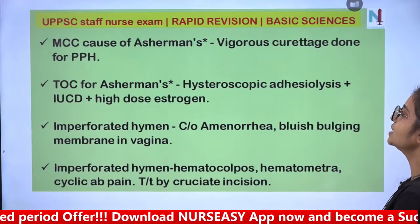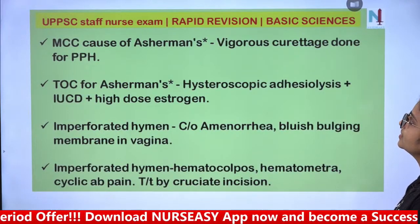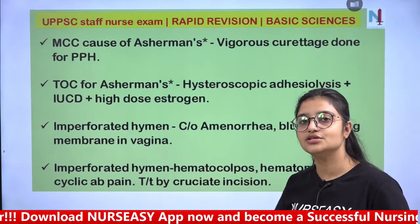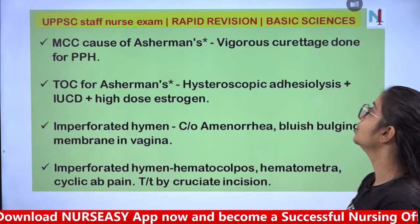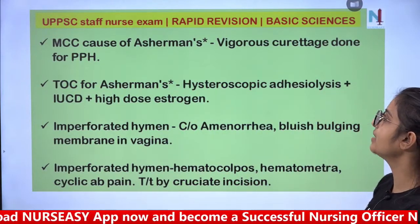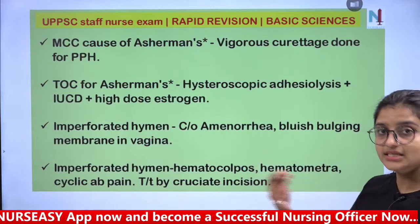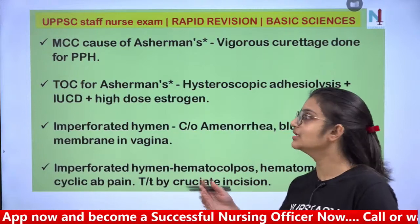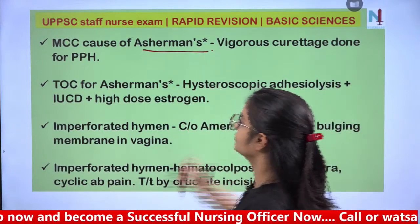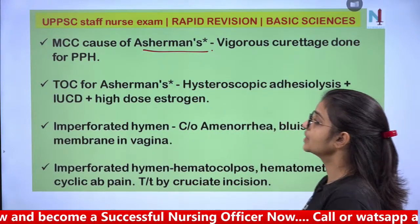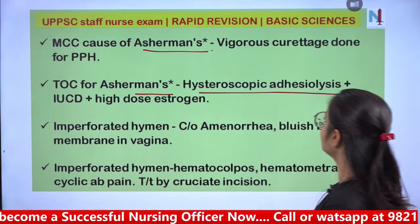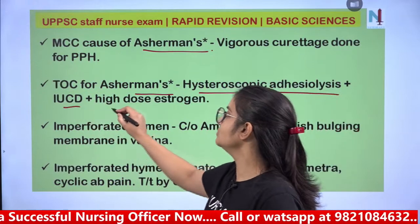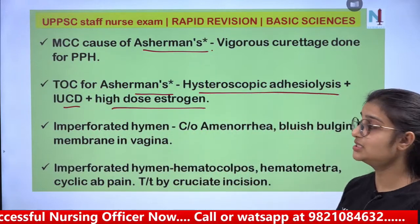The most common cause of Asherman's syndrome is vigorous curettage done for PPH. In Asherman's syndrome, scar tissue forms in the uterus. Treatment of choice is hysteroscopic adhesiolysis — removing the adhesions, followed by IUCD and high-dose estrogen.